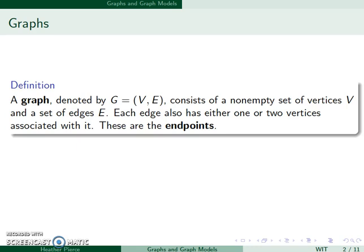We have to have some vertices, we have to have at least one. However, our edges can actually be an empty set. Each edge has either one or two vertices associated with it, which are the endpoints.